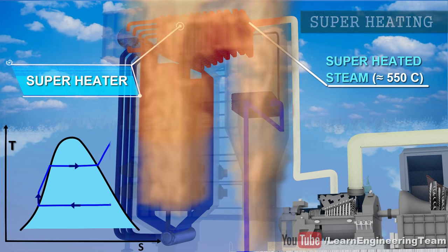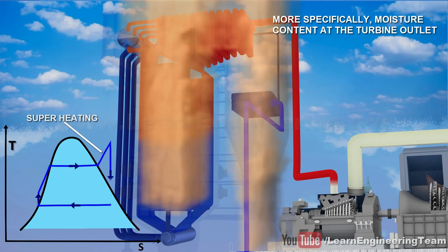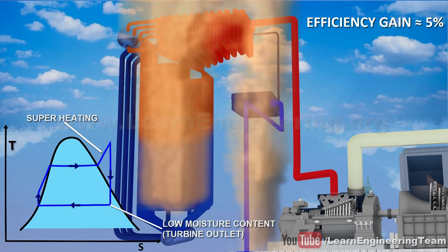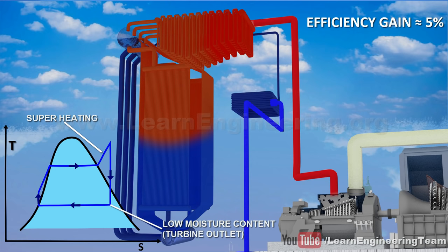Superheating also reduces the moisture content in the steam. The steam is then supplied to the turbine inlet.